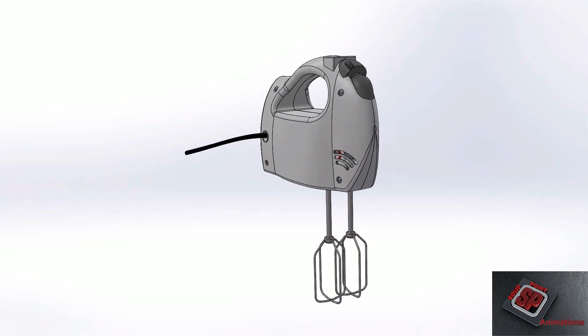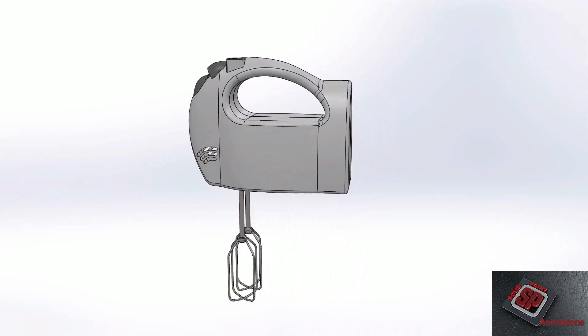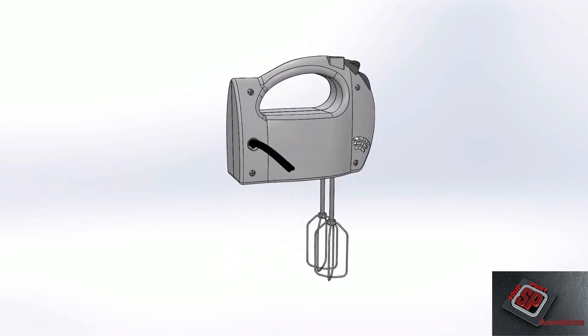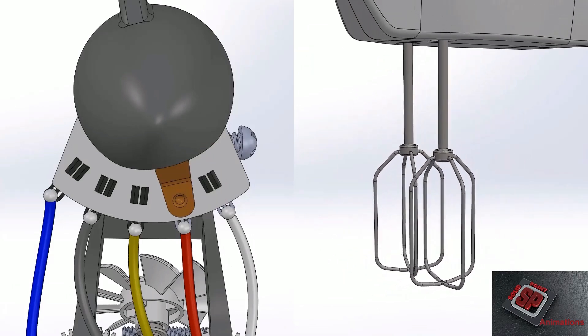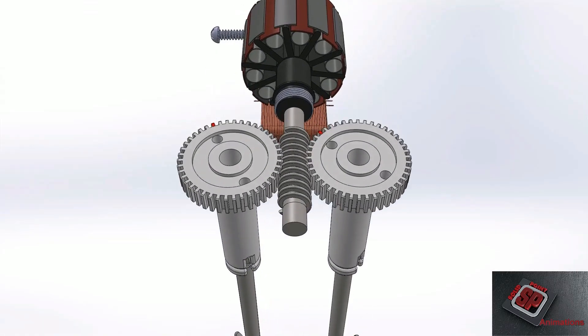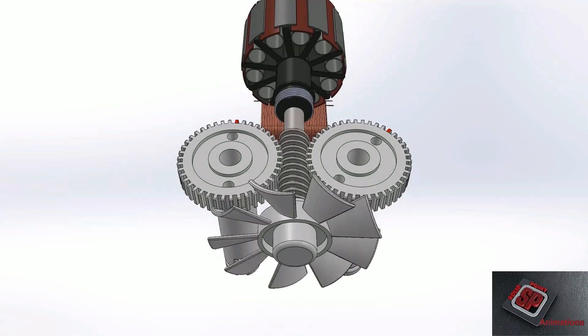Hand mixers are small, lightweight, and versatile. They can mix things such as cake batter, eggs, mashed potatoes, and more. In this video we will investigate how the user can vary the speed of the motor, how the beaters are spun using a worm gear system, and how electric hand mixers cool down.